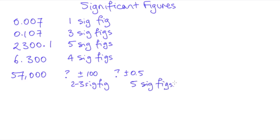One way to get around this ambiguity is to specify the uncertainty as I just did, and another way is to use what's called scientific notation or standard form. So I can write 57,000 as 5.7 times 10 to the power of 4. And if I write it like that, then I know there are only two significant figures here.